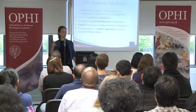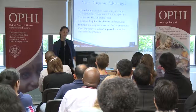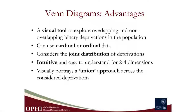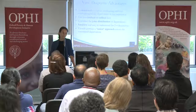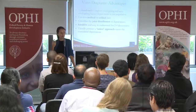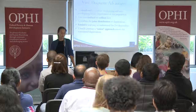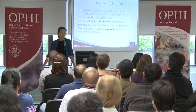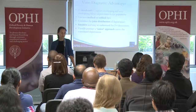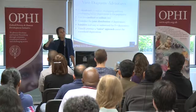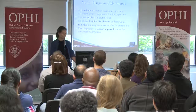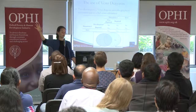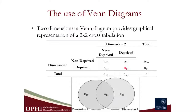What are the advantages of Venn diagrams? It's a visual tool — in a paper by Chico Ferreira at the World Bank with Mariana Lugo, they would like a comeback of Venn diagrams (their paper is 2013). It basically maps the overlapping and non-overlapping binary deprivations in a way that's accessible. It can use cardinal or ordinal data. It does show very accurately the joint distribution and is intuitive and easy to understand, at least for a few dimensions. You can also see visually the population deprived in at least one of the deprivations — the area of the two circles together — which is what is used in the EU 2020 measure.